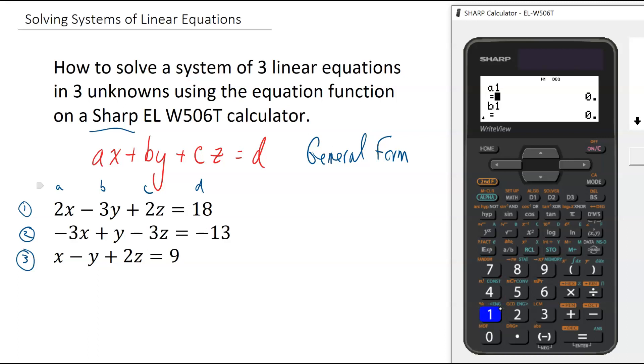And you can see that it's now sitting here waiting for me to enter in A1 and B1, which are the A and B values from the first equation, which are two and negative three. So I will enter two, hit equals, make sure you enter negative three with the negative button, not subtraction, but the negative three.